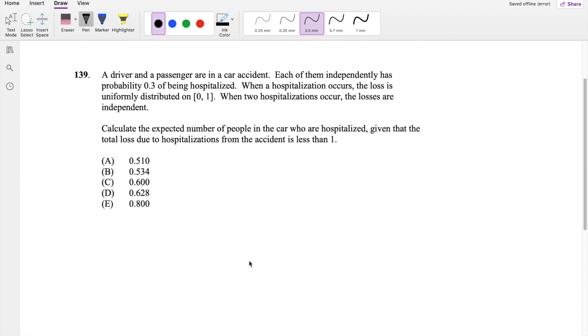Okay, as soon as you've already attempted it, let's just dive right in. So there's a driver and a passenger in a car accident. Each of them independently has a probability of 0.3 of being hospitalized. When a hospitalization occurs, the loss is uniformly distributed on 0 to 1.